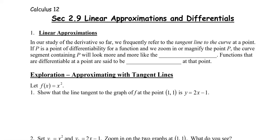In this video, we're going to take a look at linear approximations. In our study of the derivative so far, we frequently refer to the tangent line to the curve at a point. If p is a point of differentiability for a function, and we zoom in or magnify the point p, the curve segment containing p will look more and more like the tangent line. Functions that are differentiable at a point are said to be locally linear.